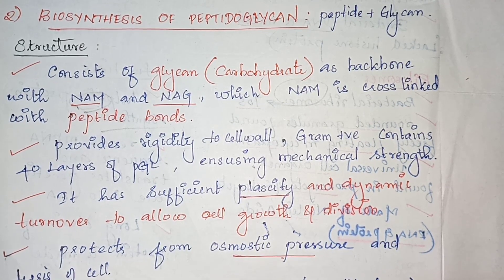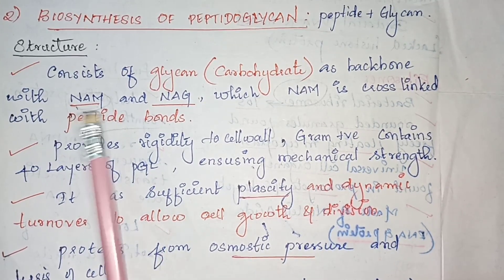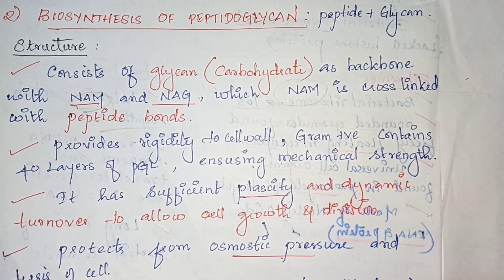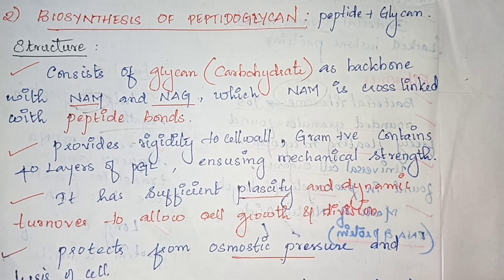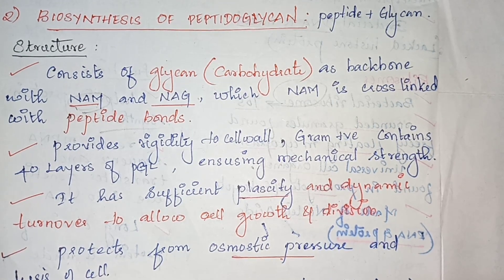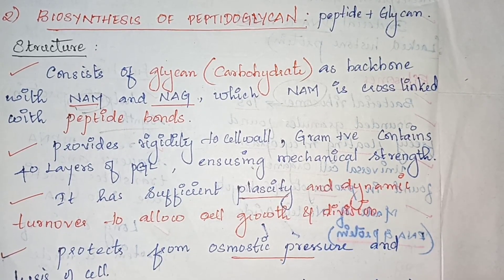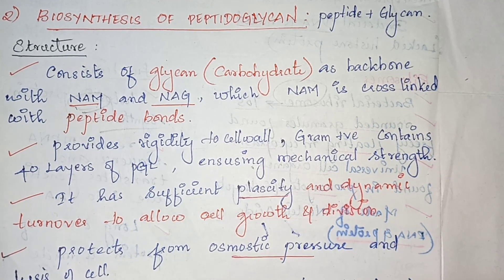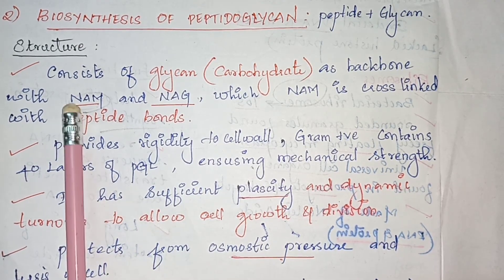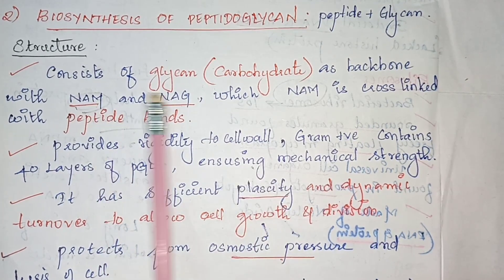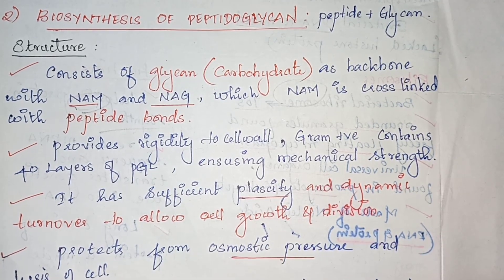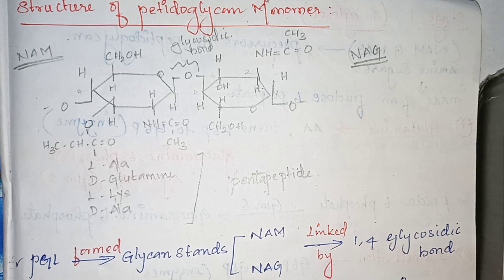Peptidoglycan is a heteropolymer of sugar and amino acids. The sugars are NAM and NAG. NAM consists of certain amino acids: L-alanine, D-glutamine, L-lysine, and D-alanine. These amino acids are linked with the sugars by peptide bonds, and NAM and NAG are cross-linked to each other by glycosidic bonds.